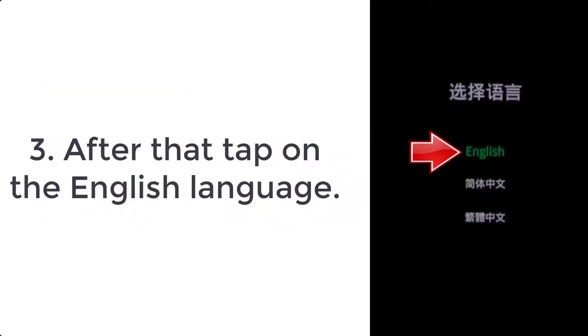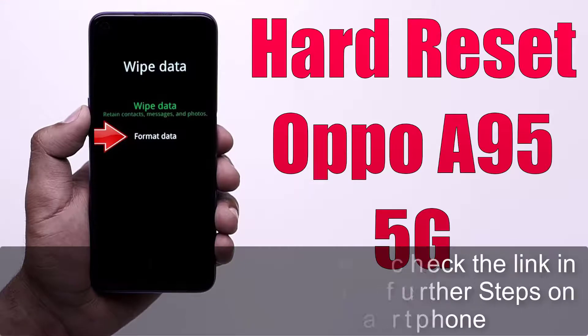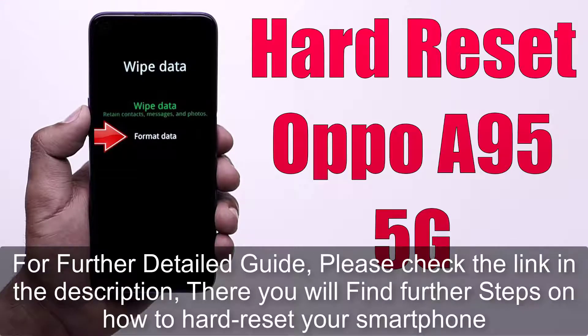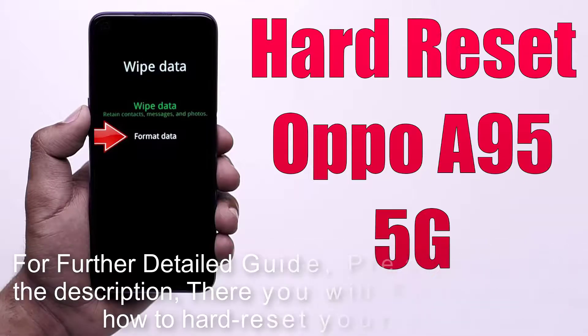Step 3: Tap on the English language. For a further detailed guide, please check the link in the description — there you will find further steps on how to hard reset your smartphone.